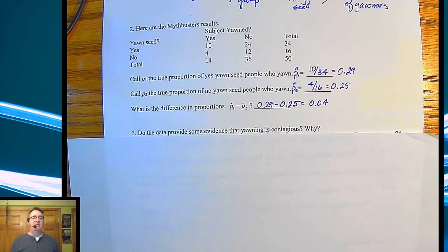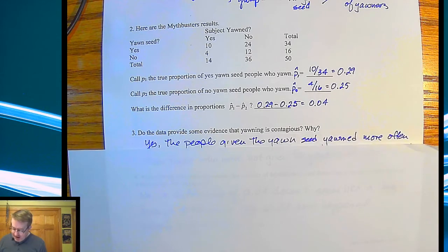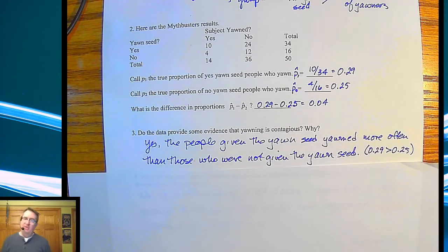Does this data give us some evidence to provide that yawning is contagious? And the answer is, yeah. You know, given the people who had the yawn seed yawned more than the people who weren't given the yawn seed, there's some evidence there. Is it convincing evidence? That's yet to be seen. But there is at least something there. 29 is bigger than 25. So it's at least worth another look.